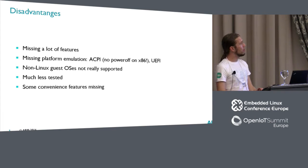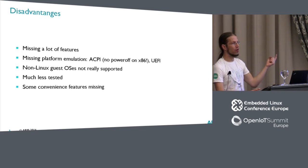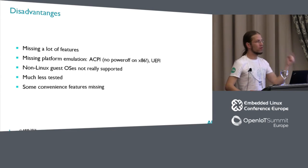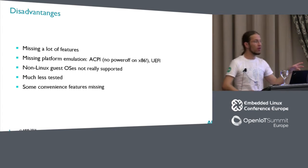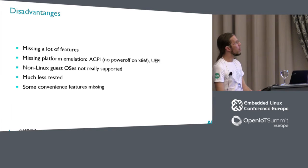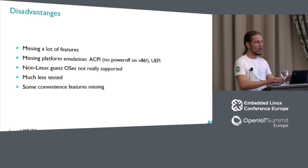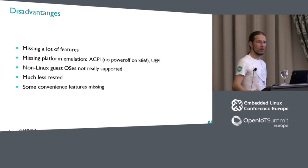Platform emulation is missing. ACPI and UEFI are the prominent examples here, which has the interesting effect that we can't power off from KVM tool on x86. I spent an hour digging into the kernel and found that powering off on x86 is basically only via ACPI. You can do reboot via other methods, but power off is only via ACPI. So if you type power off in a guest, it kind of shuts down, but you don't get the prompt back easily — you have to break it.